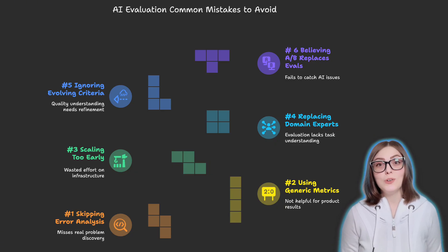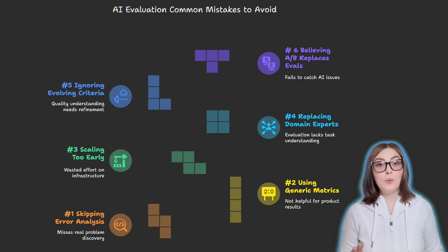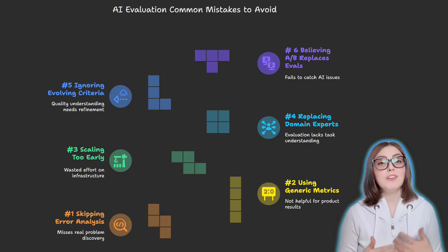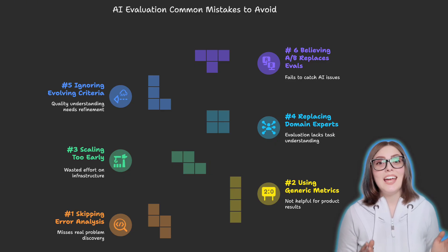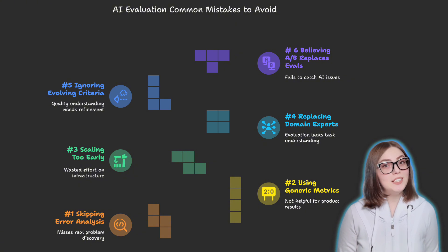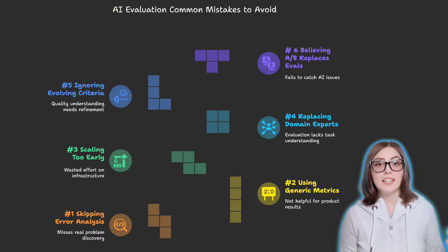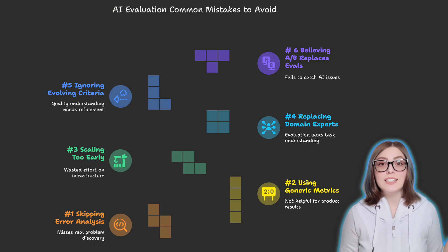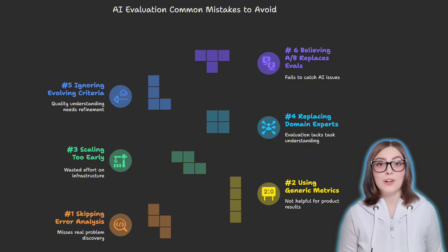Fifth, ignoring the fact that your criteria will change and evolve — your understanding of quality will evolve, so you will need to continuously revisit and refine your definitions, prompts, and notes. Sixth, believing that A/B testing replaces evals — evals catch issues with AI results before users do. A/B tests are best for optimizing metrics like conversion or satisfaction once you're confident that your AI meets basic quality standards.